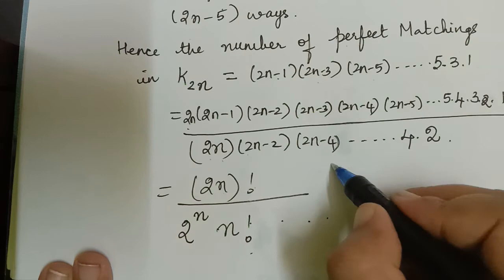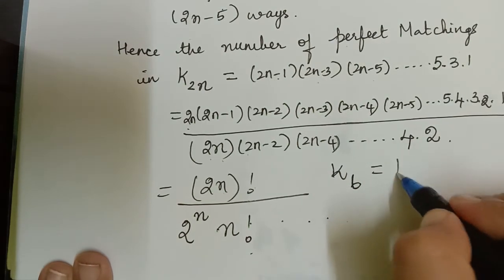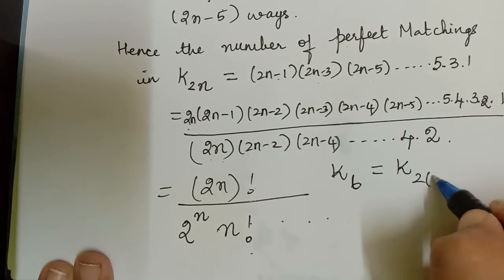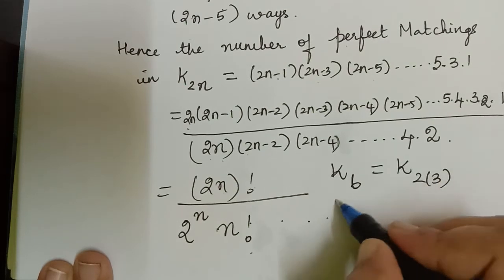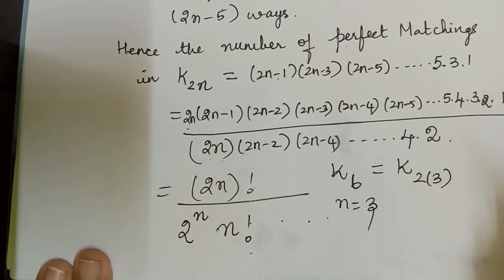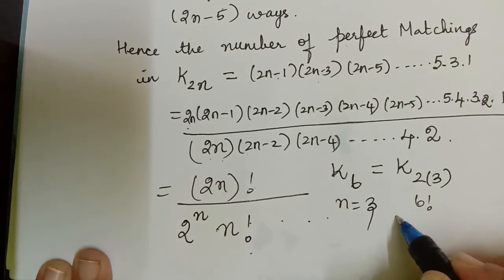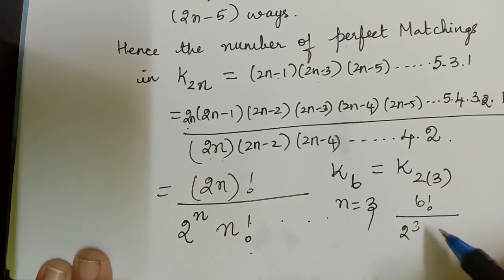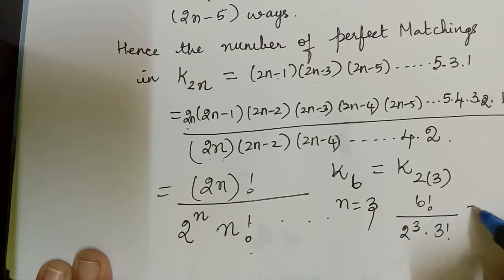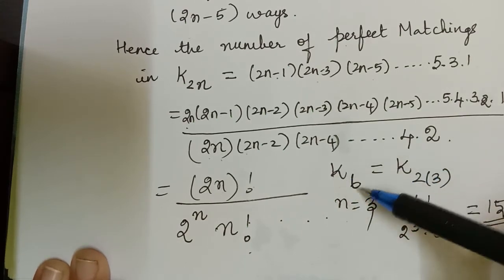For example, for K₆, we have K₂ₙ with n = 3. So the number of perfect matchings in K₆ equals 6! divided by (2³ × 3!) = 720 divided by (8 × 6) = 720 divided by 48, which equals 15.